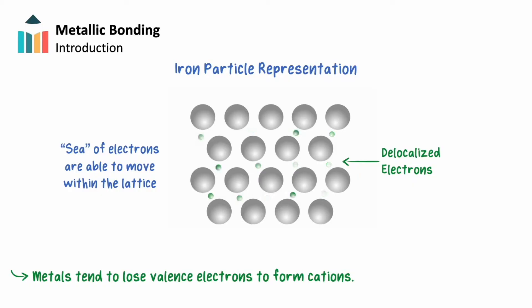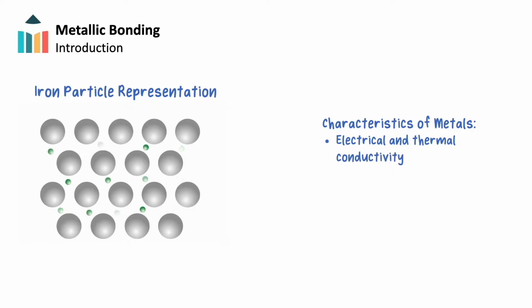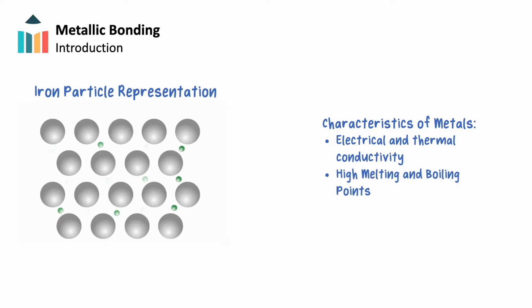It is the strength of these bonds that will determine a metal's physical properties. Metals typically have the following characteristics as a result of their metallic bonds. They have excellent electrical and thermal conductivity, which is caused by the mobility of their electrons. Metals have high melting and boiling points, caused by their relatively high bond strength.